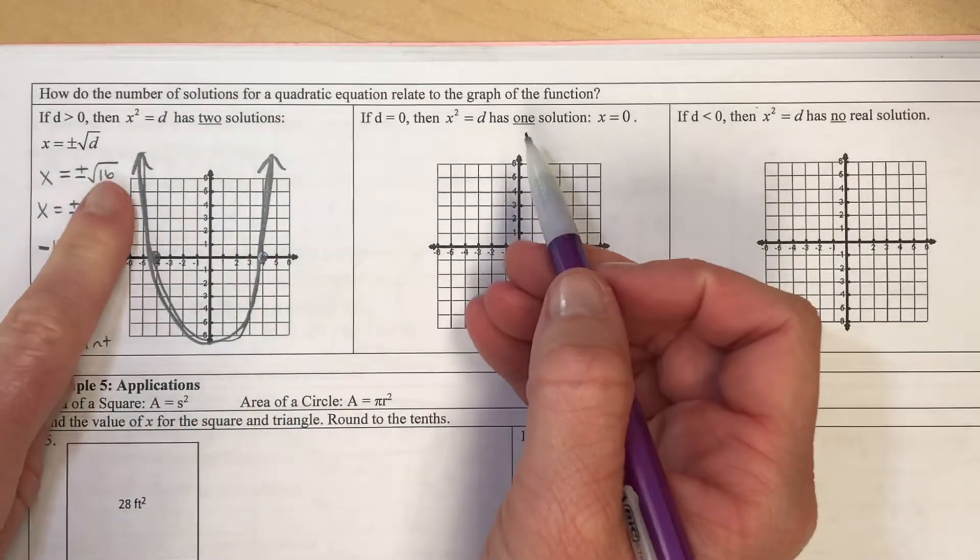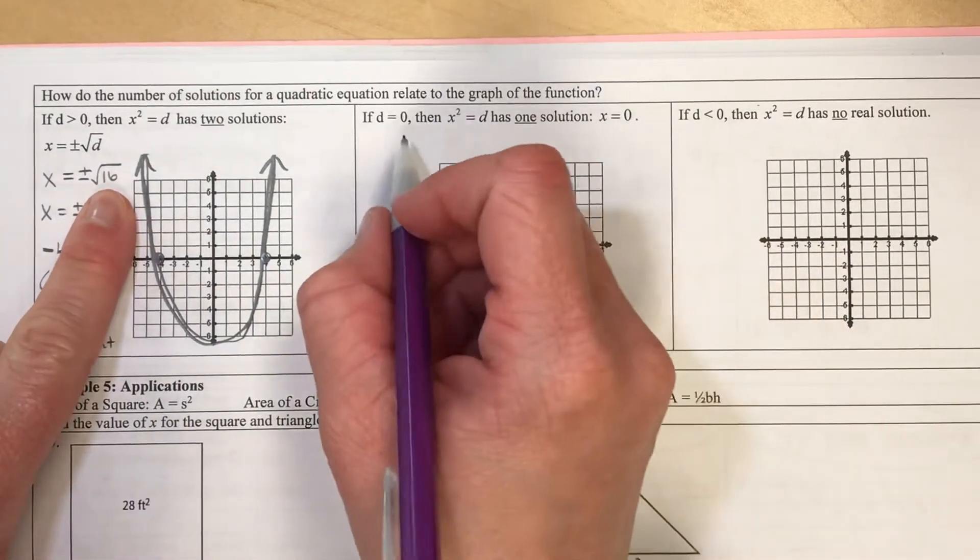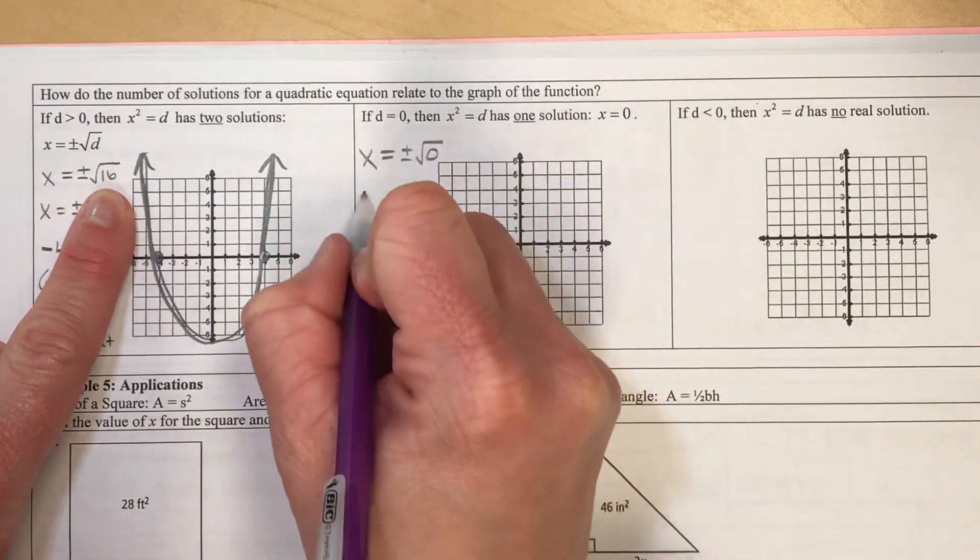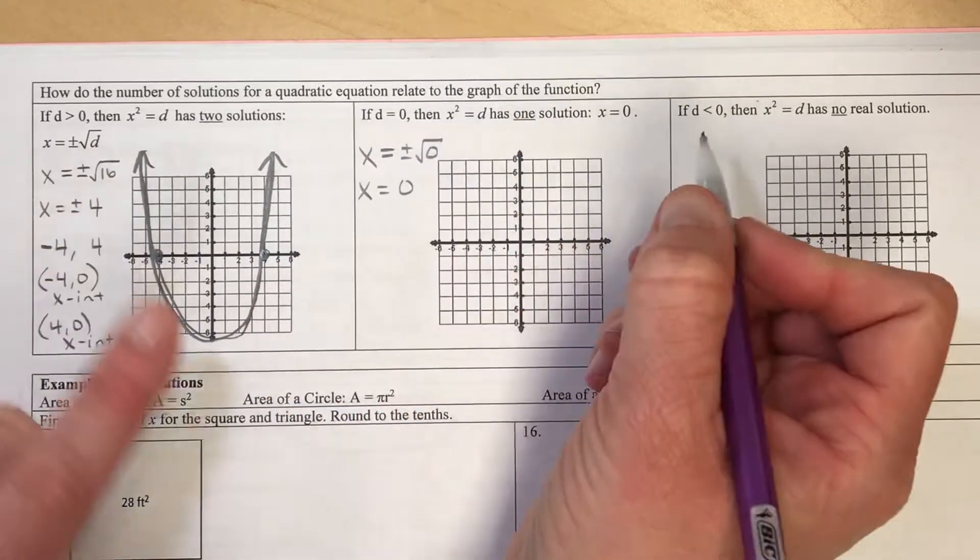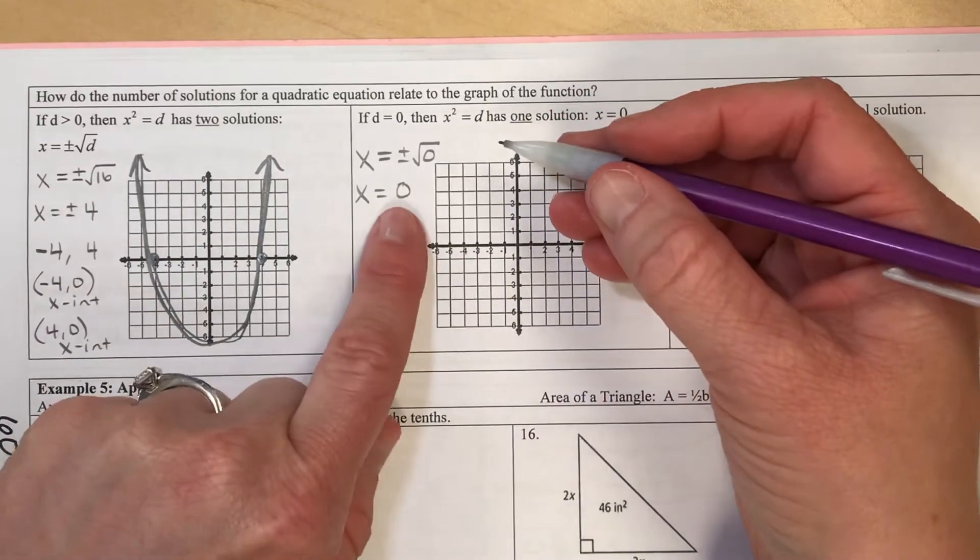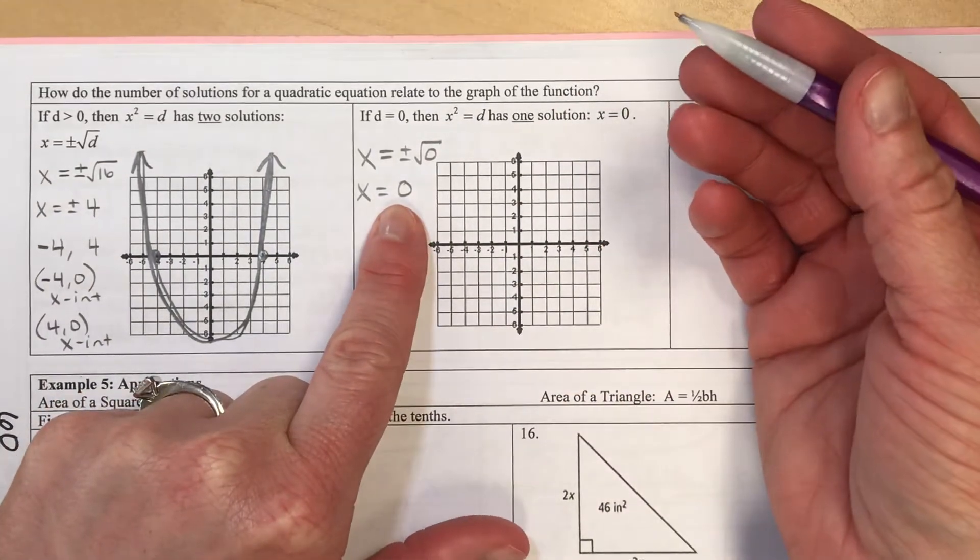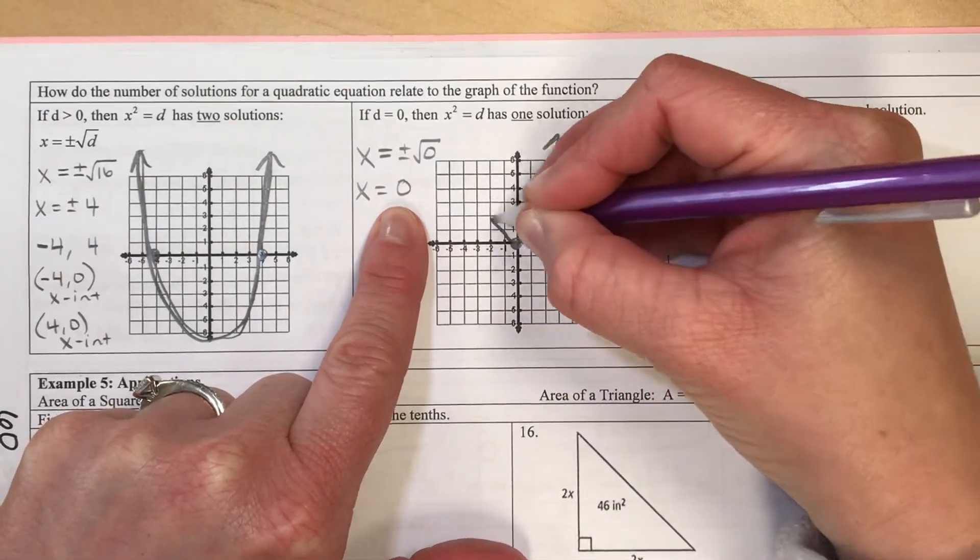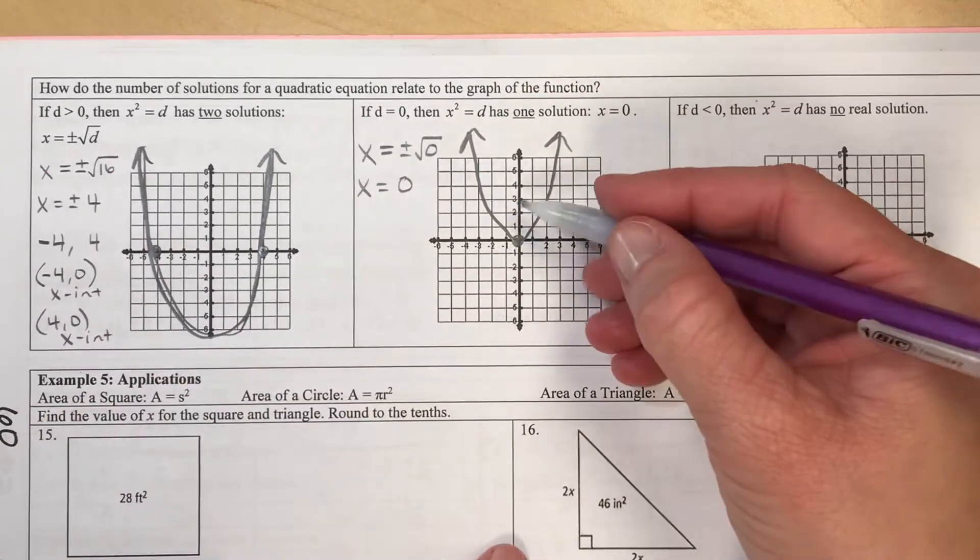And if we had been solving and we were taking the square root of 0, well the square root of 0 is just 0. And so our picture is going to look different because there is no such thing as positive or negative 0. That just means that our parabola only crosses our x-axis one time.